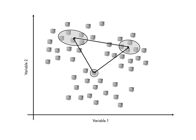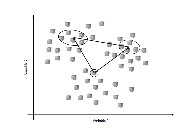By default, MATLAB uses the smallest distance between any two points in the two groups. But you can also specify other methods for defining distance, such as using the center of each group. Regardless of which method you use, you can also specify which metric you want to use for measuring distance, such as the default Euclidean distance or city block distance.